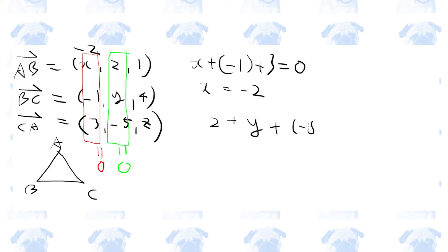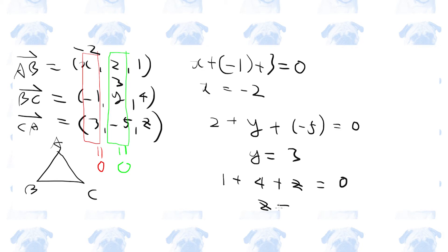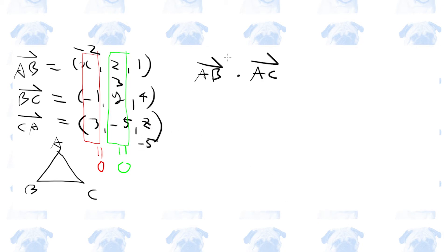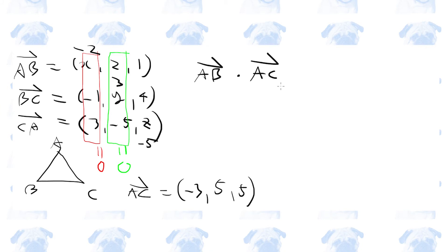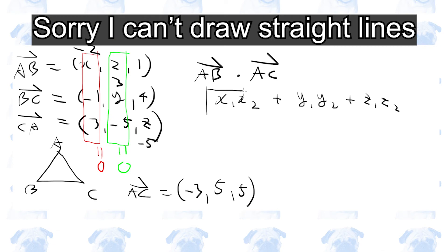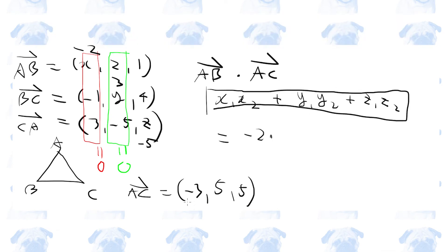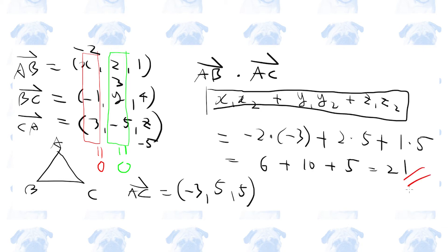2 plus Y plus minus 5 must equal 0, so Y equals 3. And 1 plus 4 plus Z must equal 0, which means Z equals minus 5. Next, we need to find the scalar product of vector AB and vector AC. Vector AC goes in the opposite direction to vector CA, so vector AC is minus 3, 5, 5. The scalar product is: minus 2 times minus 3 plus 2 times 5 plus 1 times 5, which equals 21. This is the answer.